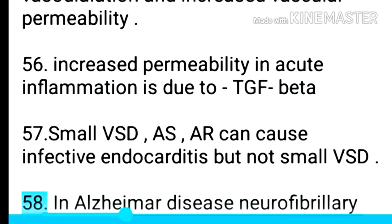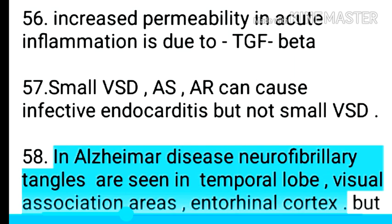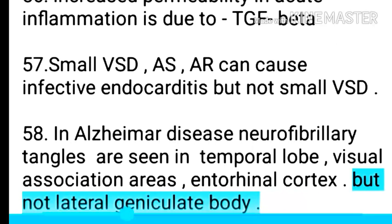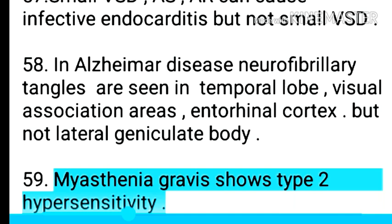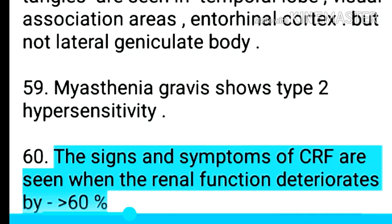Point 59: In Alzheimer's disease, neurofibrillary tangles are seen in the temporal lobe, visual association areas, and entorhinal cortex, but not the lateral geniculate body. Point 60: Myasthenia gravis shows type 2 hypersensitivity.